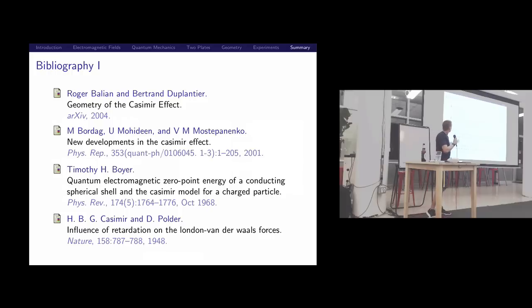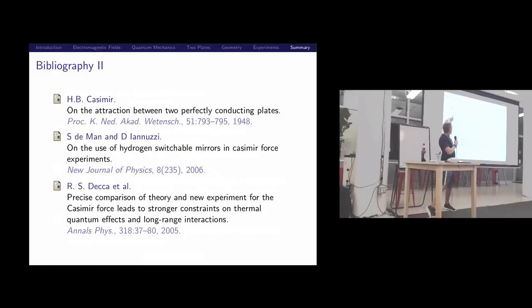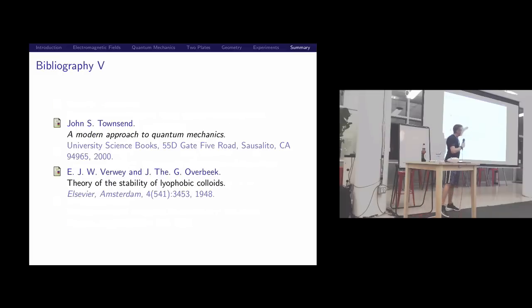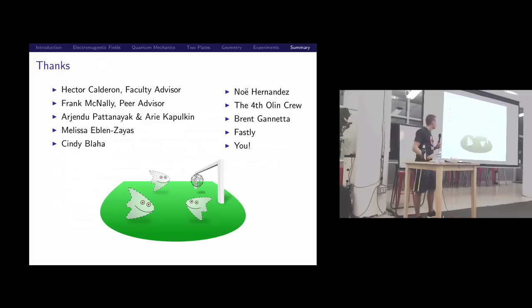This is a geometry-dependent effect, so the shape you're using matters, and it depends on the material and the quantum scale. If you want to learn more, Balian wrote Geometry of the Casimir Effect. Casimir's paper on the attraction between two perfectly conducting plates, very small, very obtuse, easy to miss, but it turns out to be really well-known now. If you want to learn more about quantum mechanics, I really recommend Townsend. Thanks so much.